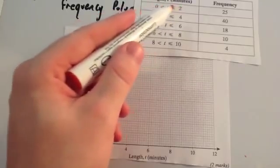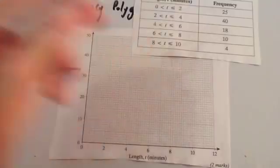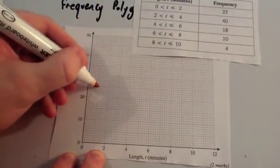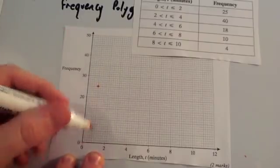So the midpoint of this interval, 0 to 2, the midpoint will be 1. And the frequency is 25. So you go 1 across and 25 up and you put a little cross. So 1 across, 25 up.